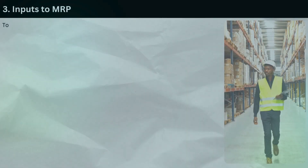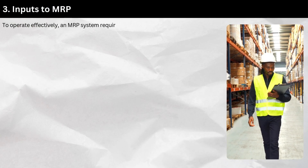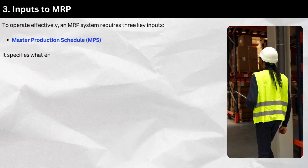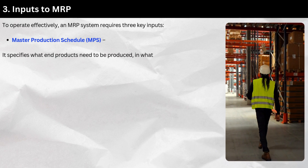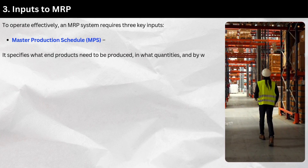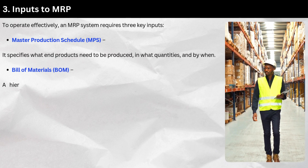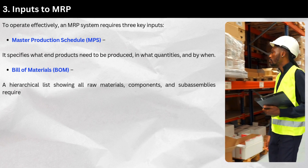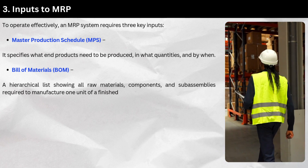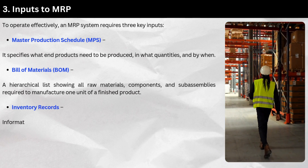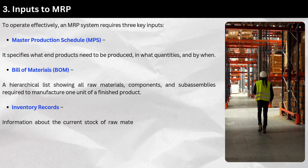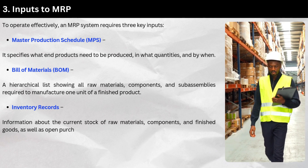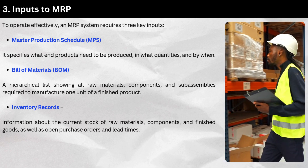Inputs to MRP. To operate effectively, an MRP system requires three key inputs. First, the Master Production Schedule (MPS): it specifies what end products need to be produced, in what quantities, and by when. Second, the Bill of Materials (BOM): a hierarchical list showing all raw materials, components, and subassemblies required to manufacture one unit of a finished product. Third, inventory records: information about the current stock of raw materials, components, and finished goods, as well as open purchase orders and lead times.